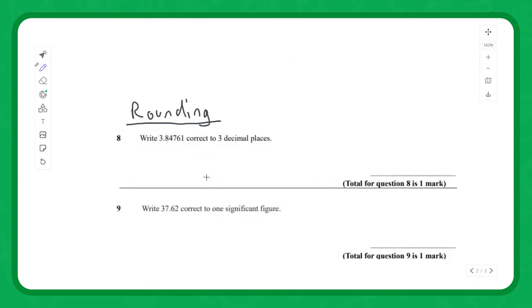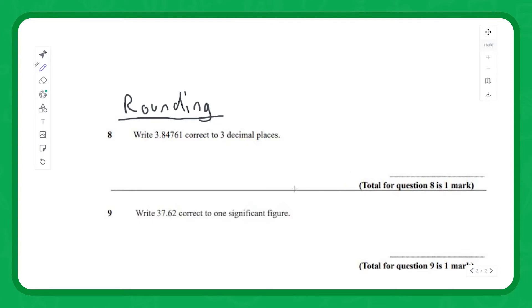First, we'll look at rounding. We want to write this number correct to three decimal places, 3dp. Well, we look at the number in the third decimal place column, which is that 7 there, and we then look at the number directly next to the 7. Because that's 5 and above, it's a 6, we know we have to round that 7 up to an 8. So we get 3.848.